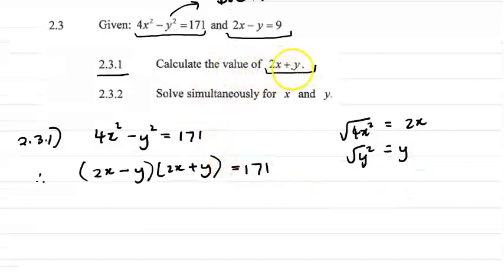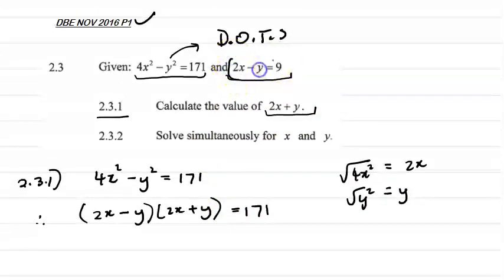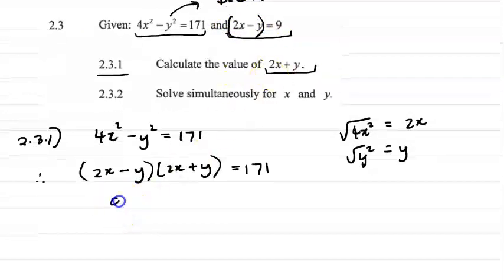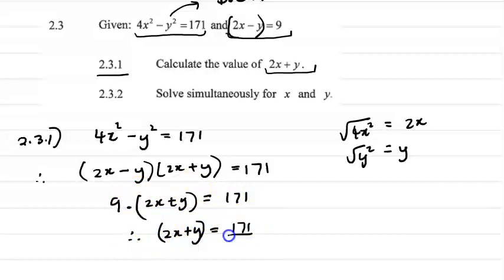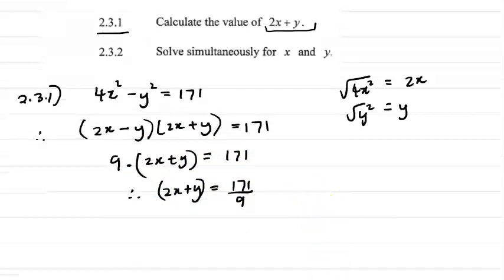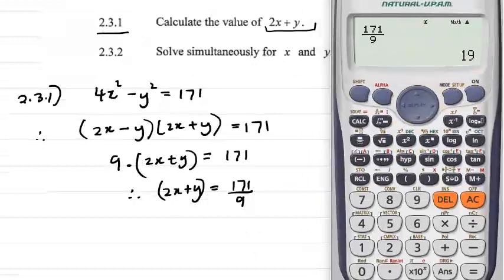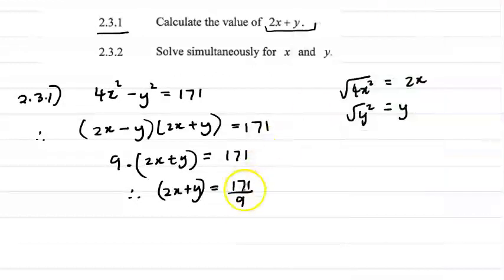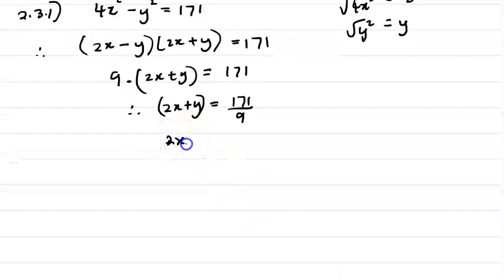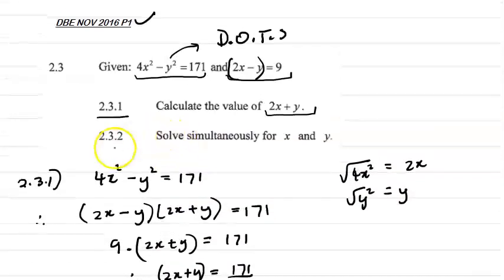Now, solving for 2x + y. Remember that we are given that 2x - y is equal to 9. So it will be 9 times (2x + y) equals to 171. So if we look at what's 171 divided by 9, I already had it here. 171 divided by 9 is equal to 19. So therefore, 2x + y equals to 19. Now, let's look at the next question.